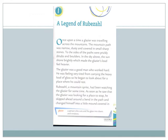Let's start the reading. Take out page number nine. Once upon a time, a glazier was traveling across the mountains. The mountain path was narrow, dusty, and covered in small sharp stones. To the sides of the path were prickly shrubs and boulders. In the sky above, the sun shone brightly, which made the glazier's load feel heavier. The glazier was a good man who worked hard. He was feeling very tired from carrying the heavy load of glass, so he began to look for a place where he could rest.